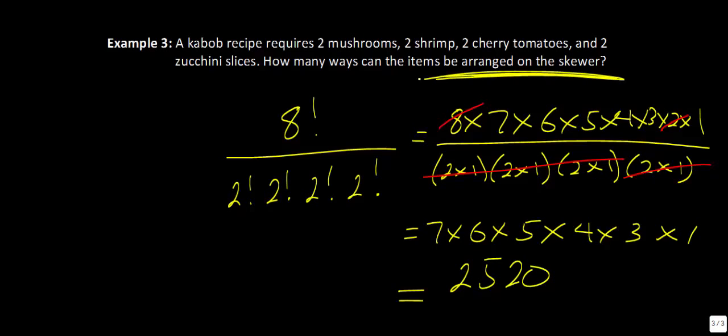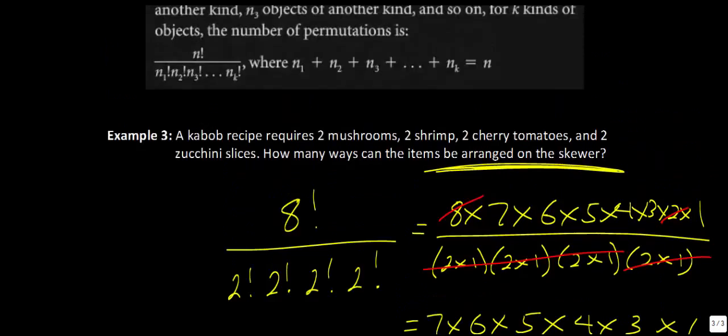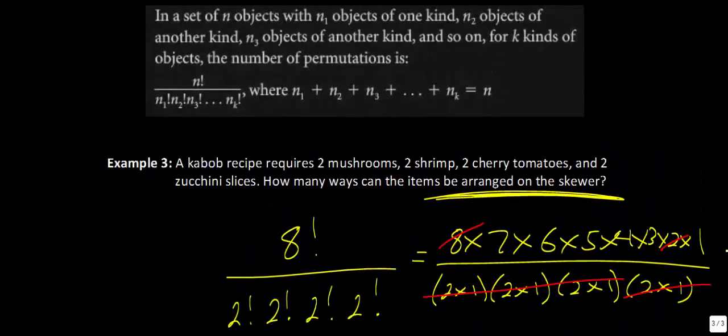So that is all this lesson is. We were just taking a look at how you could go and arrange items, depending on if you have items that are repeating, or if like in this last example you have multiple different items that are repeating. So that concludes this lesson. Thank you very much.